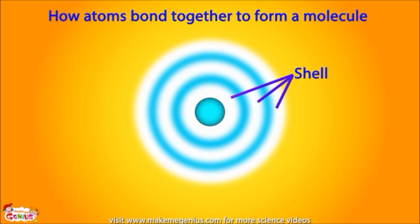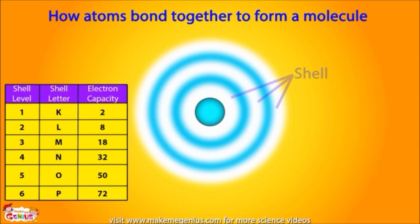Electrons keep moving in shells outside the nucleus. Each shell contains a fixed number of electrons. The first shell can have 2 electrons and the second can have 8 electrons. The third can hold 18 and the fourth can hold up to 32 electrons.